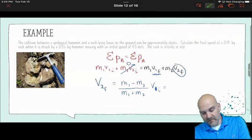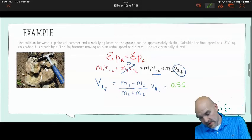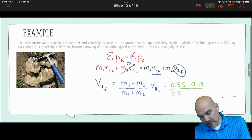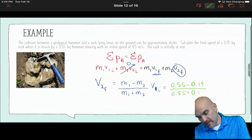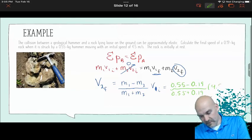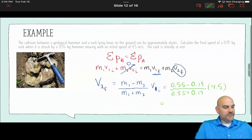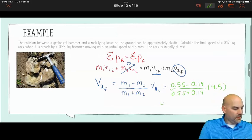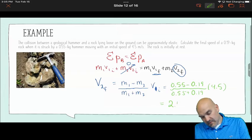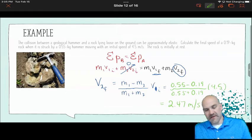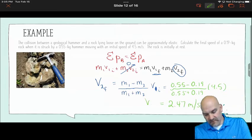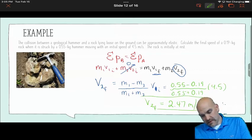And so now I'm just going to plug in my numbers, right? So M1 is 0.55, M2 is 0.19. I'm going to do that over the summing of them, multiplied by 4.5. And then I find that the speed of the rock after would be 2.47 meters per second, right? So V2F.